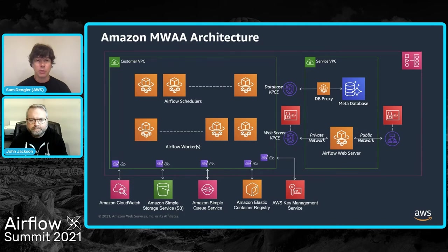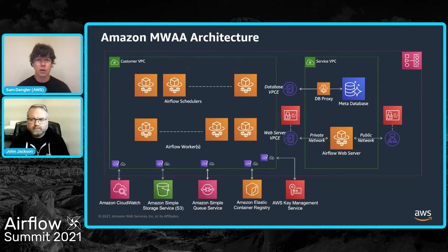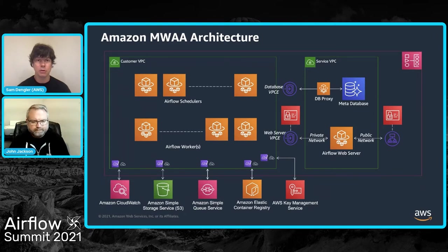We also offer a worker fleet configurable from one up to 25 maximum workers, and John will touch on how scaling works. The supporting AWS services include CloudWatch for metrics and logging, SQS for queuing work between the executor and workers, and ECR — the Elastic Container Registry — to host images deployed for the different Airflow components. By default, all data in your Airflow environment is encrypted at rest using a key managed by the service team, though you have the option to bring your own customer-managed key.